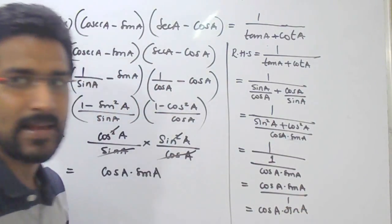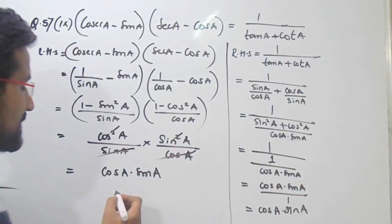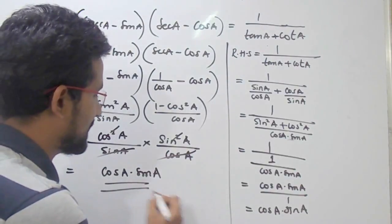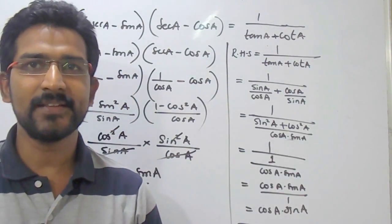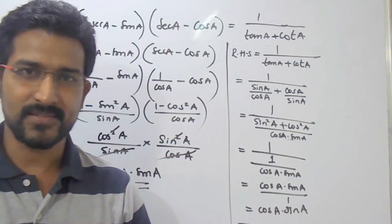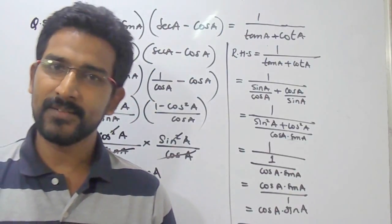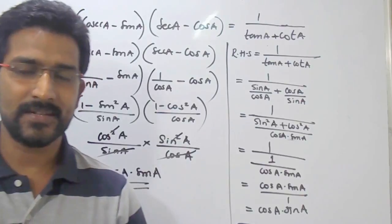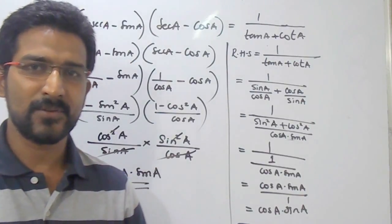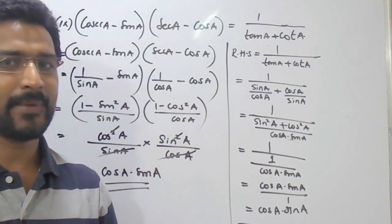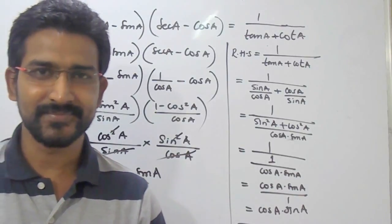And that is LHS and RHS both are equal to each other. So by this we can prove that this identity, that LHS equals RHS. In the next session we are going to see the next sub-question, that is question 10, which is the last question of question number 5. Till then practice all these terms and we will meet in the next session. Thank you.